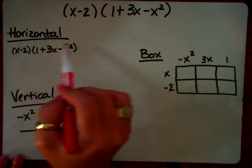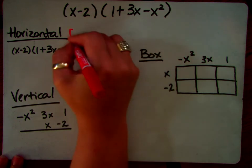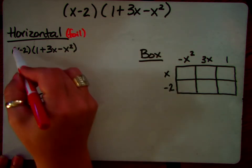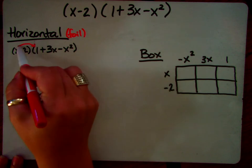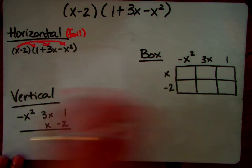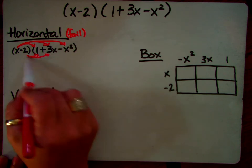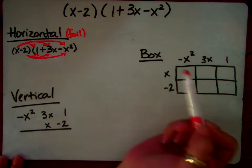The first way I'm going to teach you is horizontally. So you may call this foiling. Okay, so you're going to take this x and you're going to multiply it to every single term in the second parenthesis. Then you're going to take the negative 2 and multiply that to every single term in the second parenthesis.